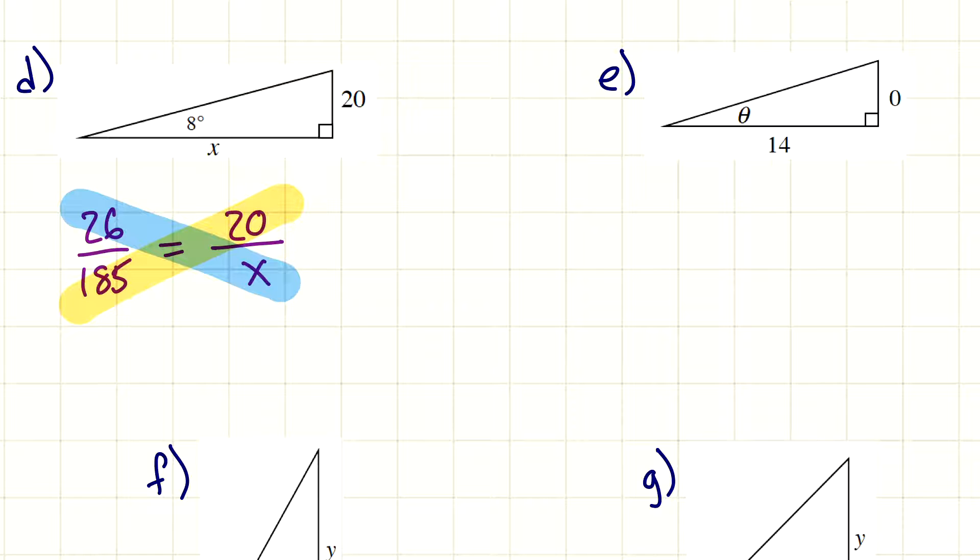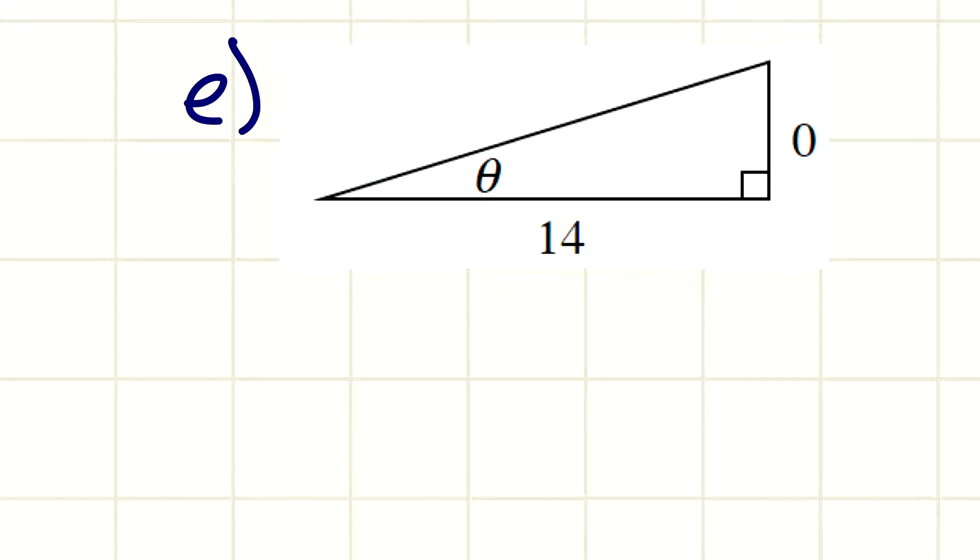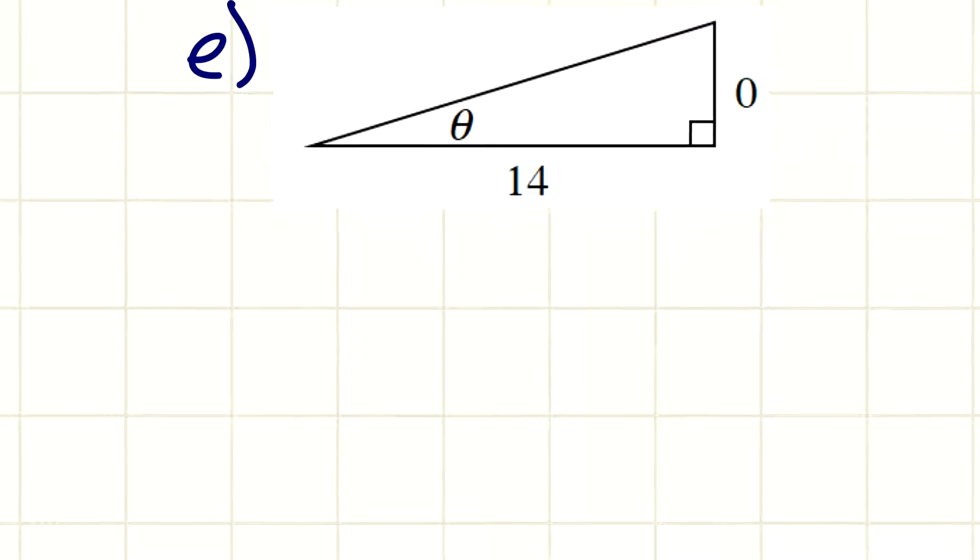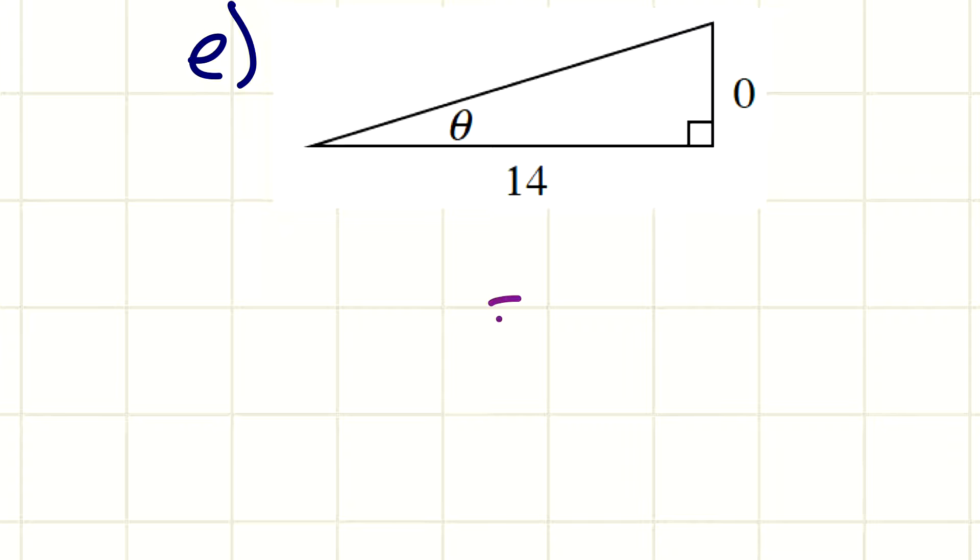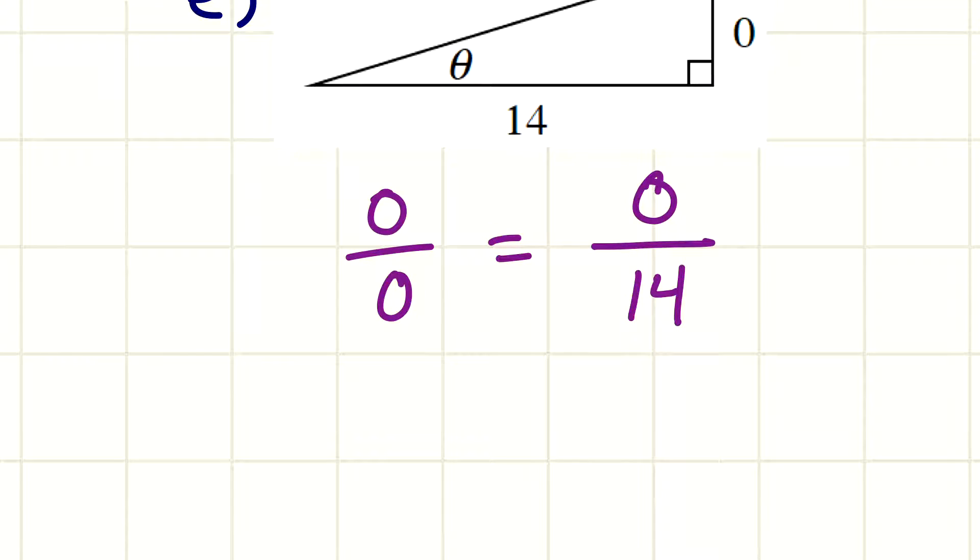And so on E, a lot of times people will, maybe you notice this one. There's a zero here. How does that change anything? It really doesn't. If we set this up the same way, this would be zero over 14, which is really just zero. That's the same as zero over one. If I look at what angle has a slope ratio of zero, that one I do not need to look up.